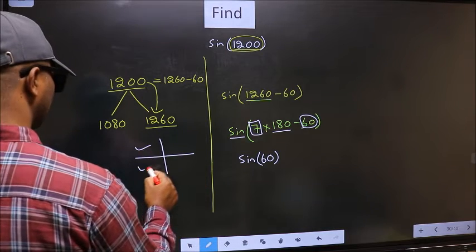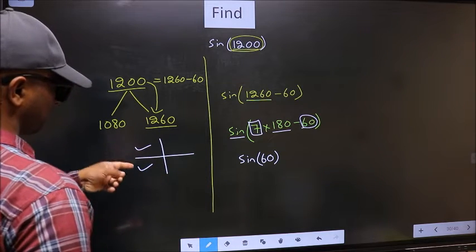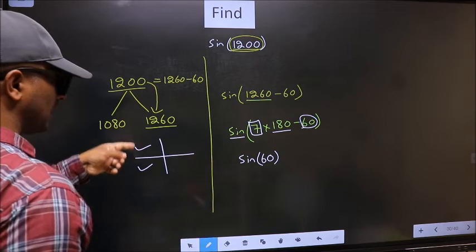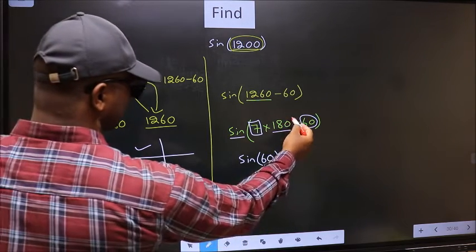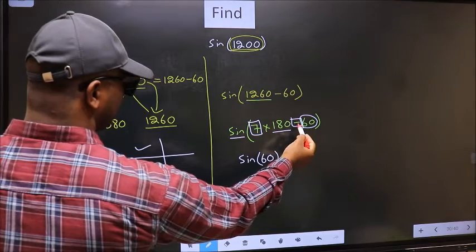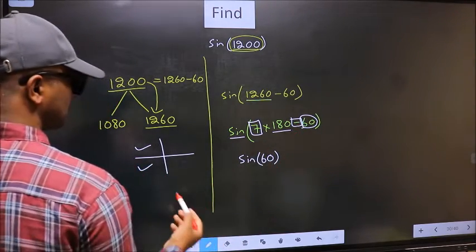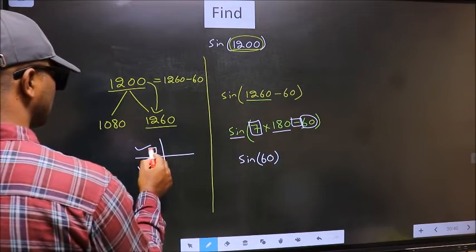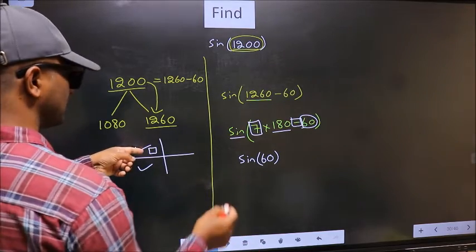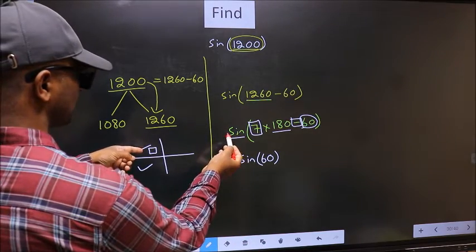So now to select the quadrant, we should look at this symbol. Here we have negative, that means the angle lies in the second quadrant. And in the second quadrant, sin is positive.